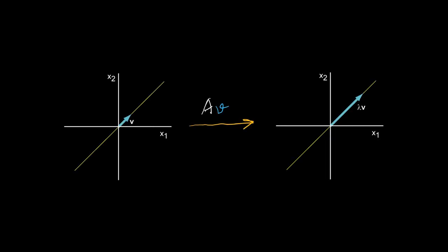Multiplication of a vector by a matrix linearly transforms the vector. So when we multiply the eigenvector by the matrix, the eigenvector gets transformed along its span. The sign and value of the eigenvalue decides the direction and extent of this change.